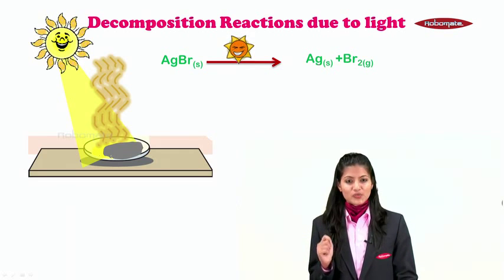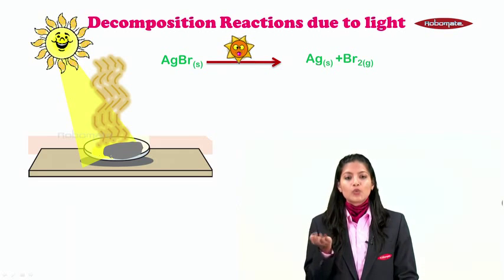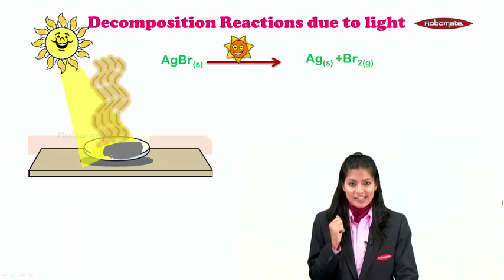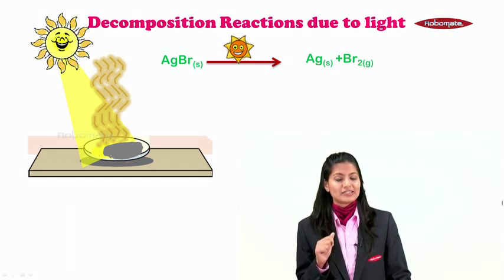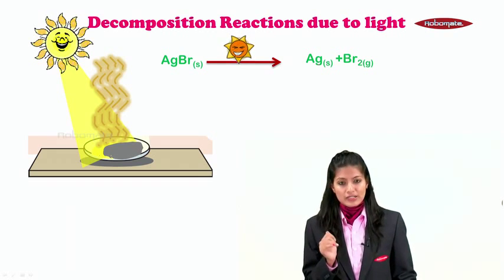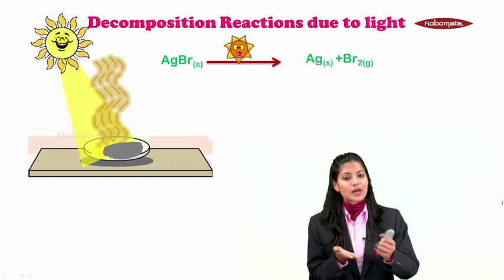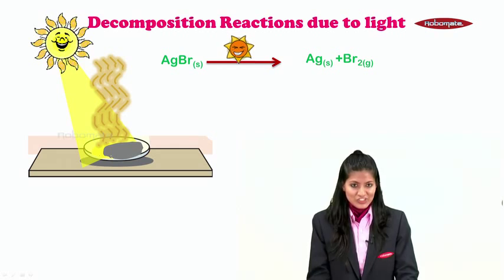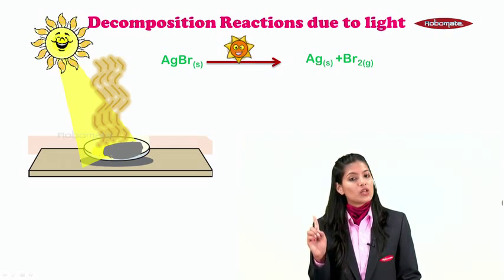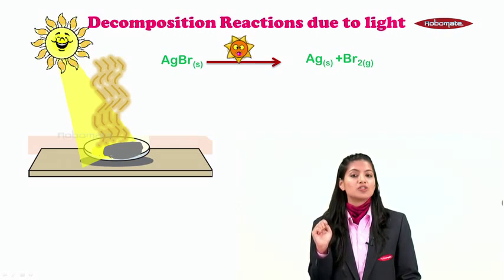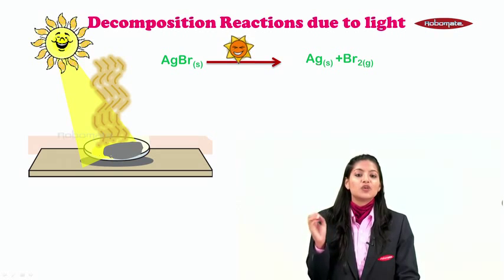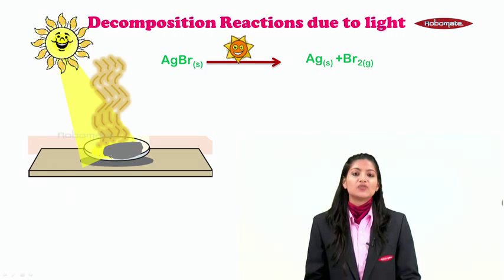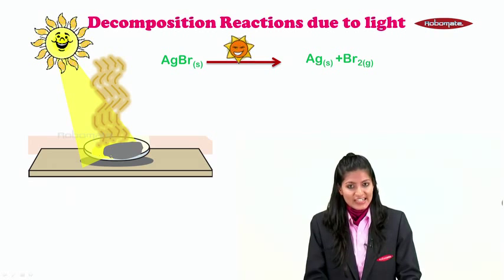Now in this reaction we took one reactant which in the presence of sunlight gave us two products, two simpler products that is Ag and Br. So there was a splitting up reaction or the breaking down reaction which is a decomposition reaction, but it only took place because of sunlight, because it was being exposed to sunlight. So it was decomposition due to light.